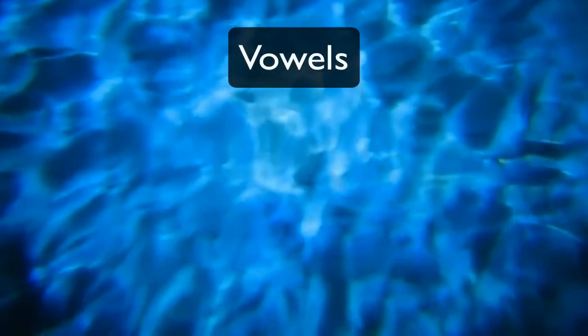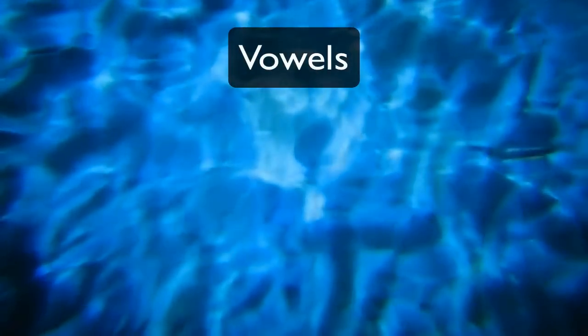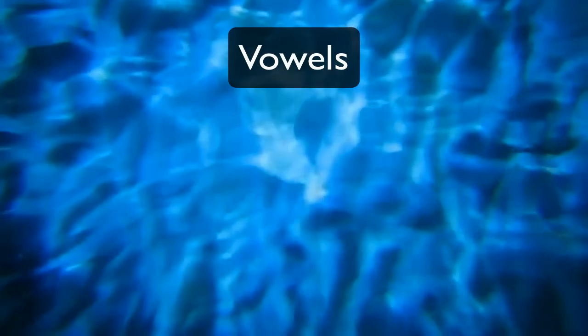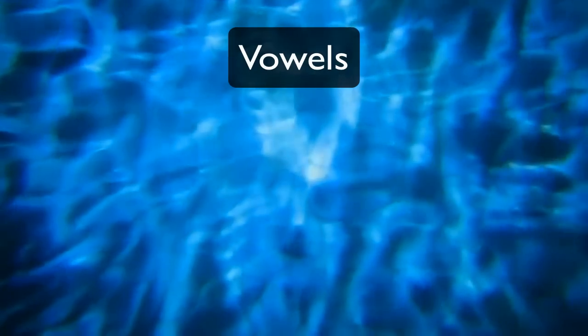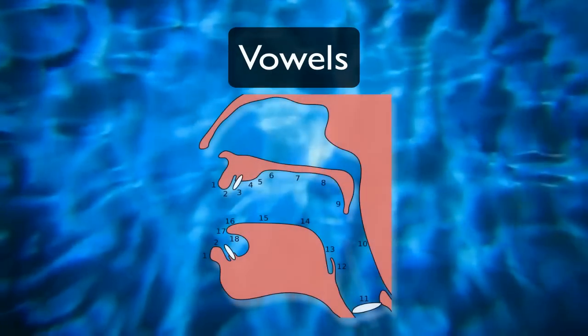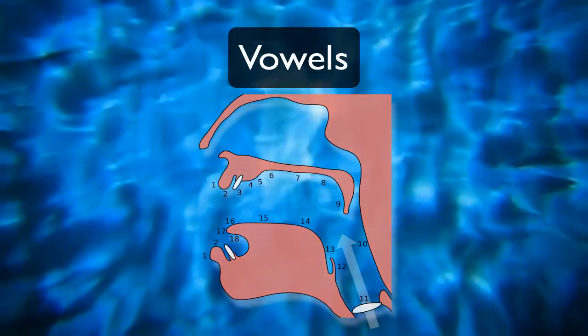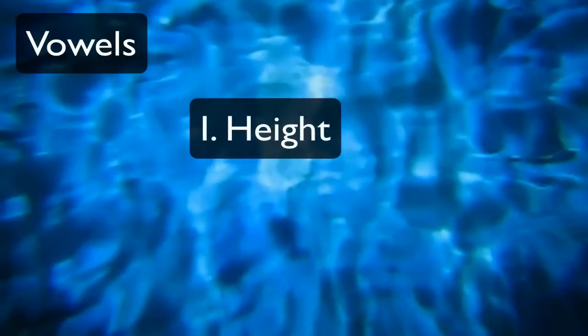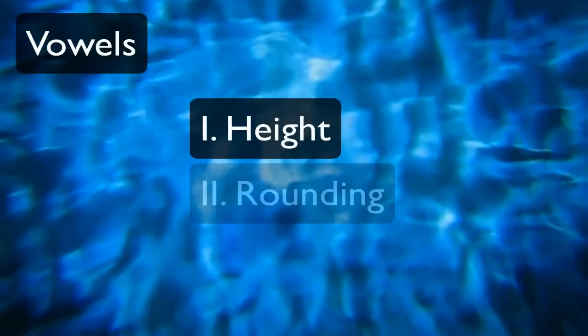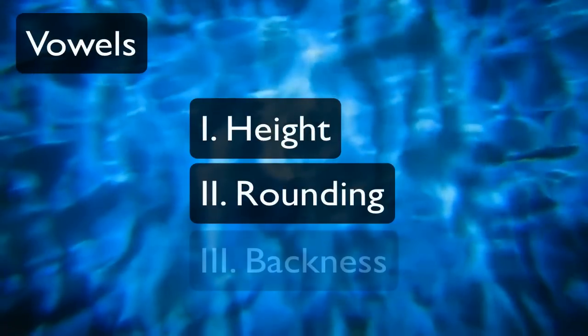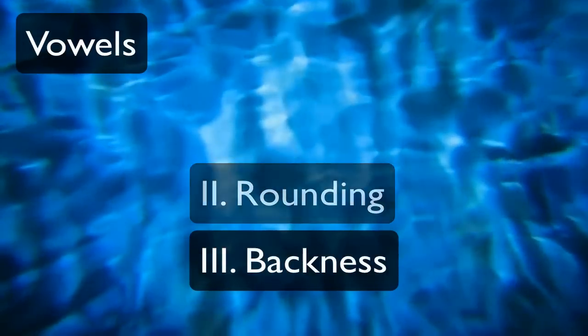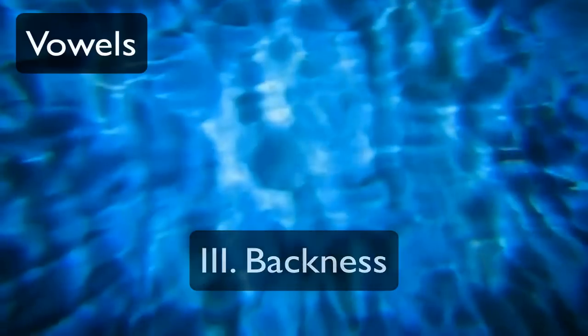Where consonants were all about how you obstructed your airflow, vowels are about how you let the air through. They too have three characteristics: height, rounding, and backness, and we'll discuss them in that order.